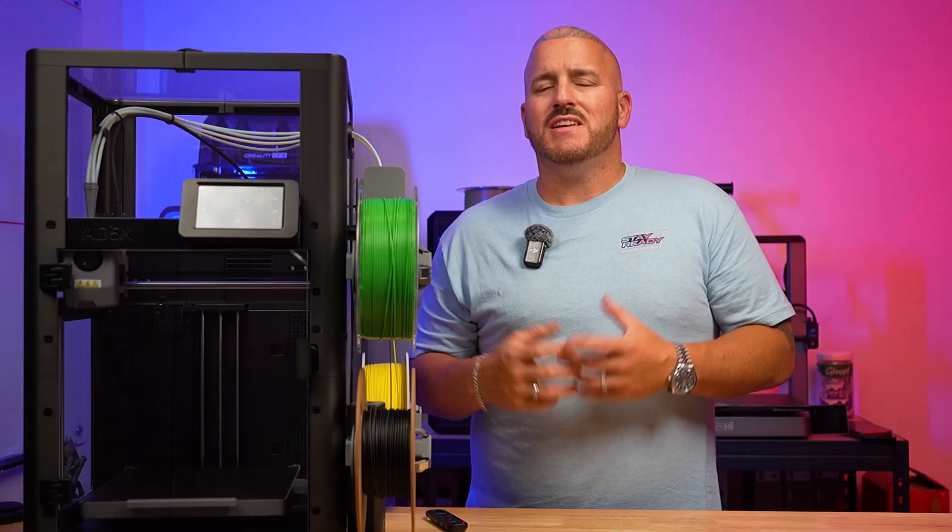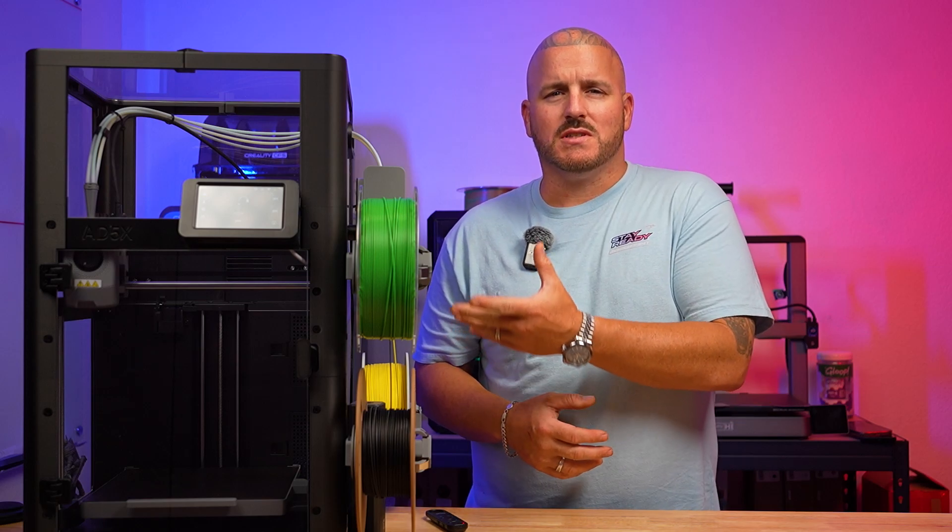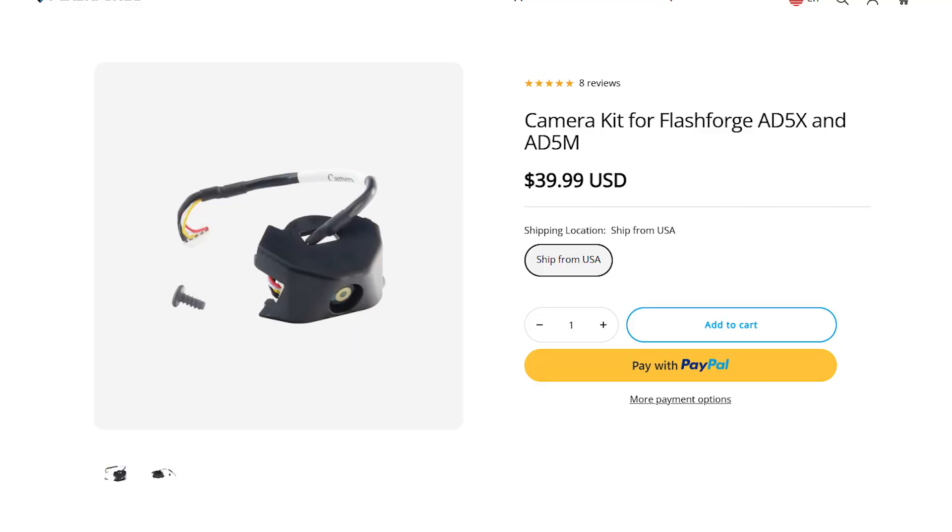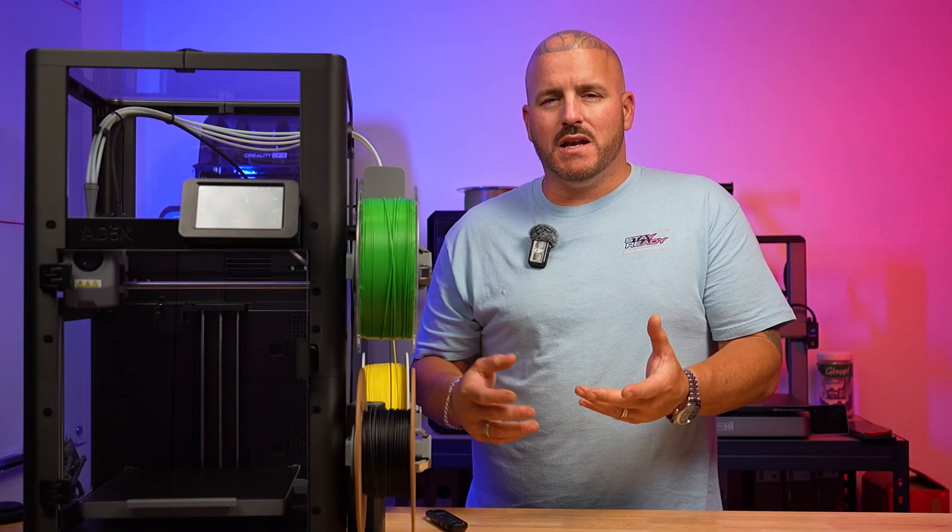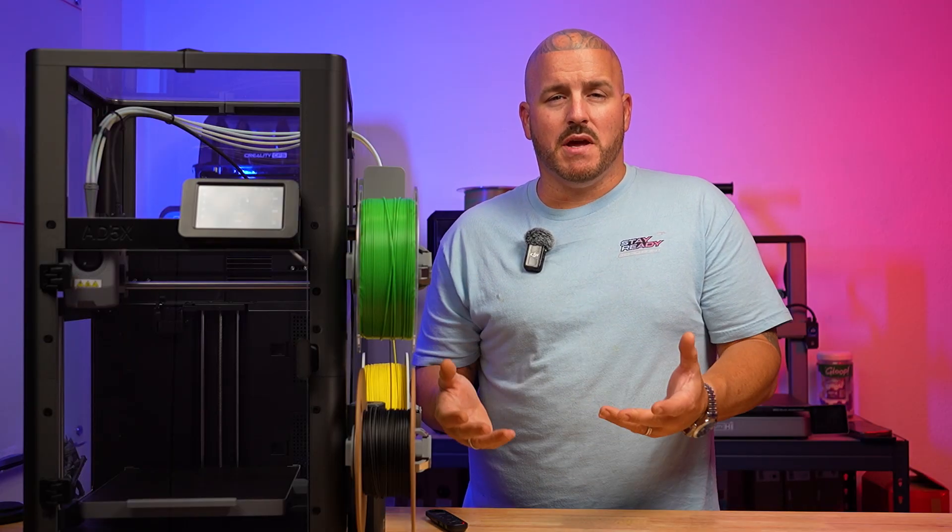Another way that they were able to keep costs down was it doesn't ship with an enclosure. It doesn't ship with the camera. These are things that you can add on for not a lot of money. The enclosure was like $49. The camera add-on itself was like $39. But if you don't want those things, then you're not paying for them.